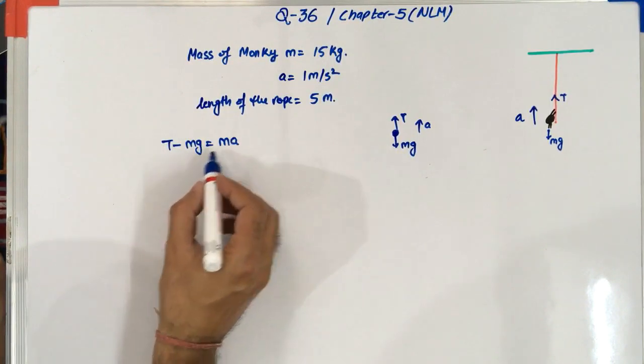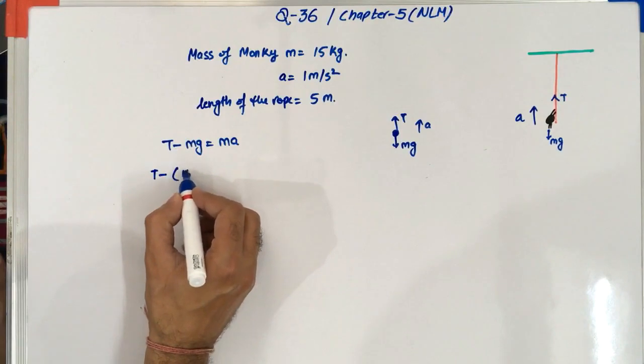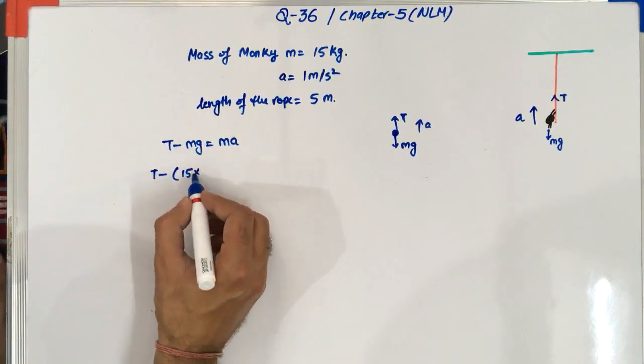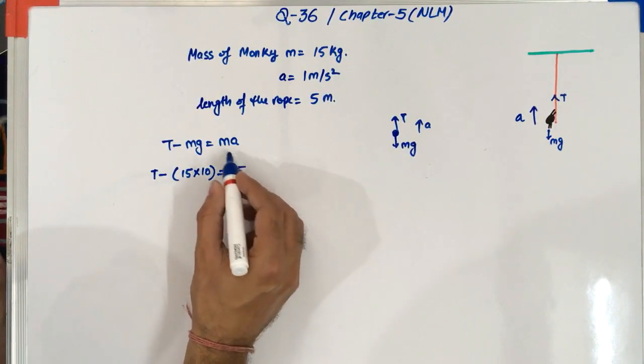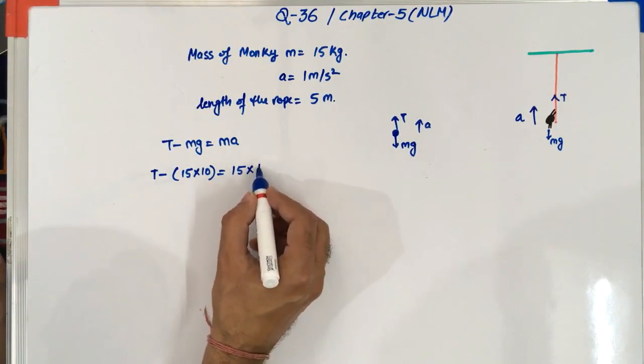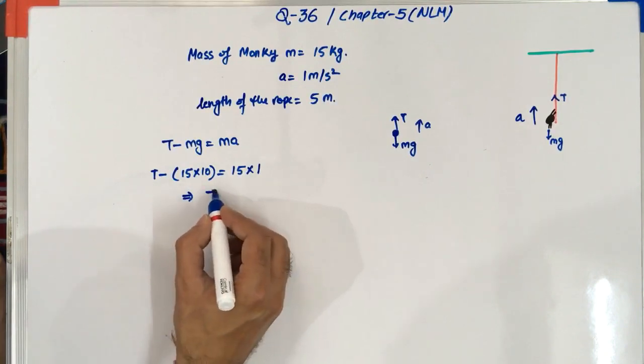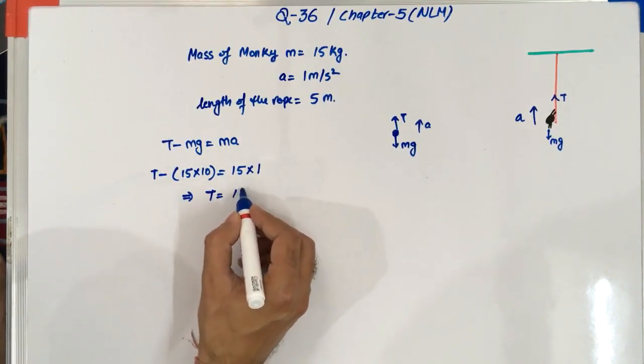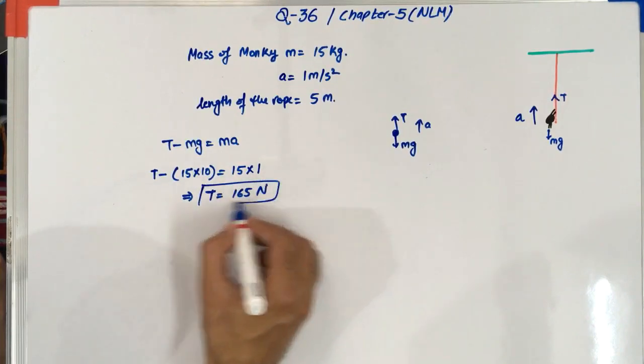So if I put the values, so this will become T minus 15 kg is the mass of the monkey and G is say 10 is equal to 15 kg is the mass of the monkey and the acceleration required is 1 meter per second square. So after solving this we will get T is equal to 165 newton. So this is the first part of this problem.